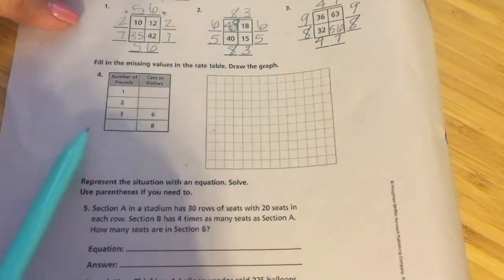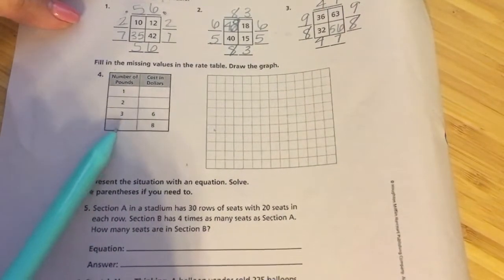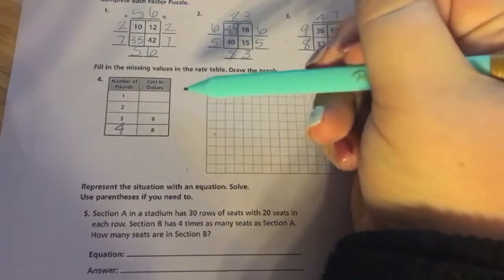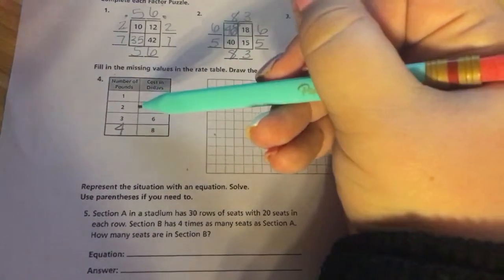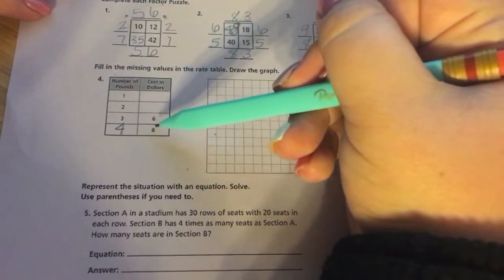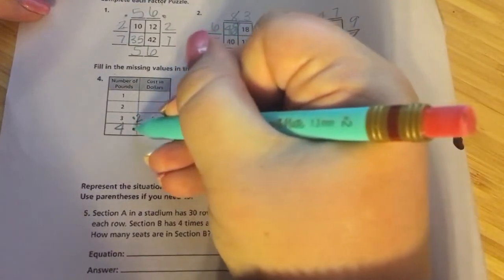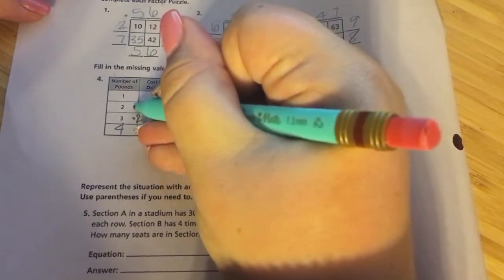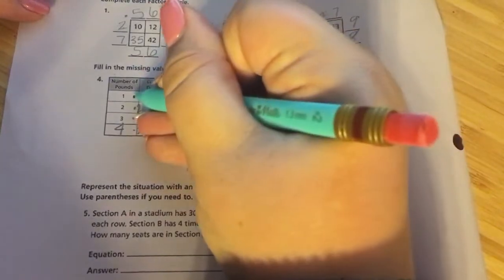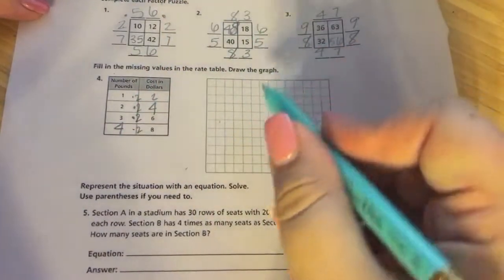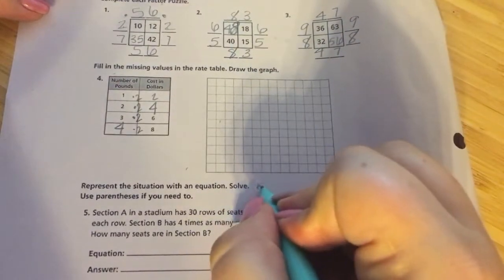This time I'm going to fill out a ratio table and then I will draw a graph. So I notice there's a pattern. 1, 2, 3, 4 on the number of pounds. And I'm also looking at 3 multiplied by something gave me 6. 4 multiplied by something gave me 8. And it's going to be 2. 3 multiplied by 2 gave me 6. 4 multiplied by 2 gave me 8. I'm going to multiply all of these numbers by 2. And I will have 2 and 4 at the top.